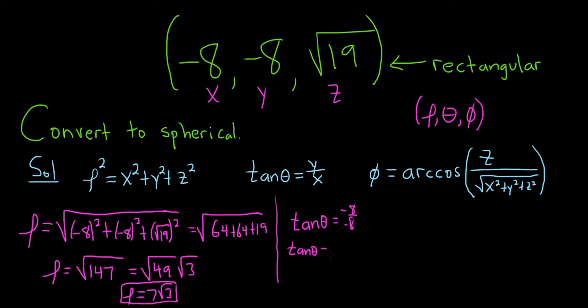So a common mistake here would be for someone to say, okay, so theta is pi over 4. That would be an incorrect answer. Even though theta does satisfy this equation, pi over 4 does work, it is the wrong answer.